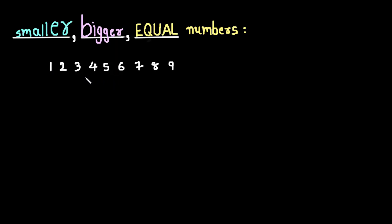As you can see, we first speak 3, then 4. So we can see 4 is bigger and 3 is smaller. For numbers 5 and 8, if we compare these two numbers, 5 is spoken first and then we speak 8. So we can say 8 is bigger and 5 is smaller.